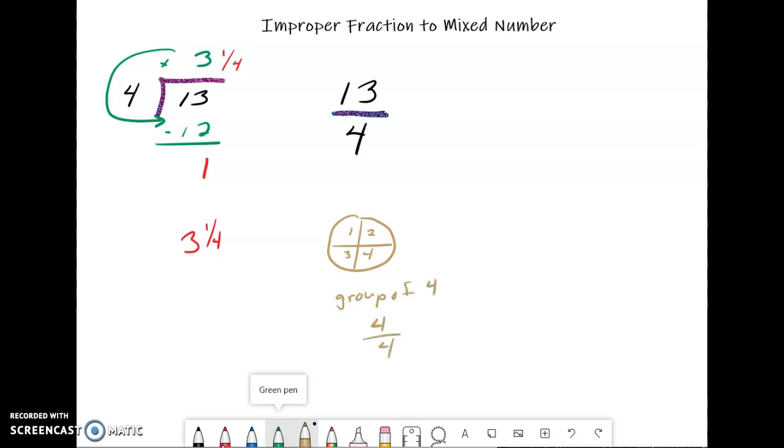And we write it as 4 fourths. So now to regroup it, if we have one group, we have 4 pieces in it. If we have two groups, we have two groups of 4. So this is 8 pieces.